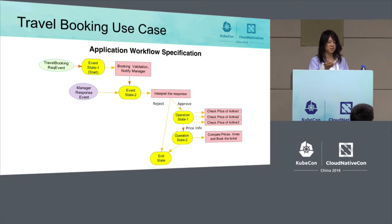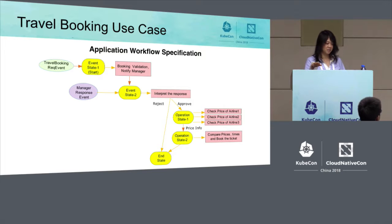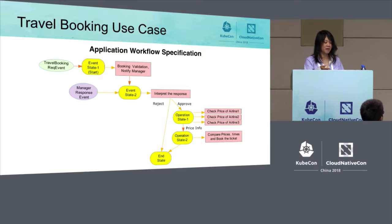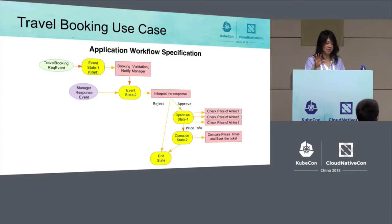At event state two, the workflow waits for a manager's response event — an external event. When that event is received, it triggers a function to interpret the response. If the response is a rejection, the workflow ends. If the response is an approval, the workflow transitions to operation state one. In this state, the serverless platform executes three functions in parallel: the first checks the price of airline one, the second checks the price of airline two, and the third checks the price of airline three.